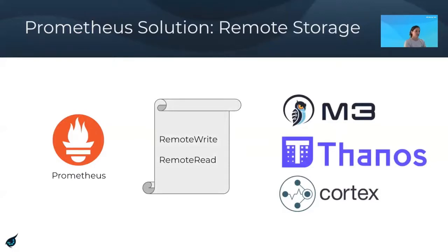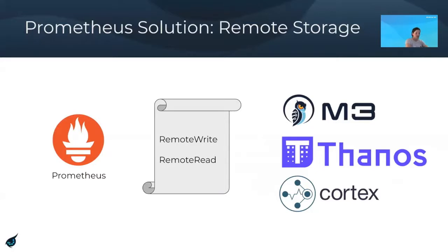Not to worry though — Prometheus is very aware of these pain points, and they intentionally built Prometheus to be an easy out-of-the-box solution. Rather than building solutions for these pain points themselves, they introduced a concept called Remote Storage, which exposes remote write and remote read APIs. These APIs can be implemented by other technologies such as M3, Thanos, and Cortex, which can then be used to solve for these pain points at scale.